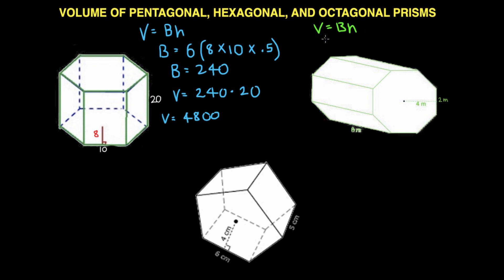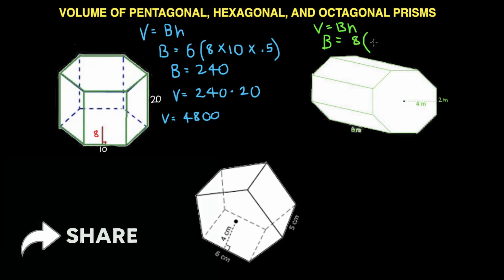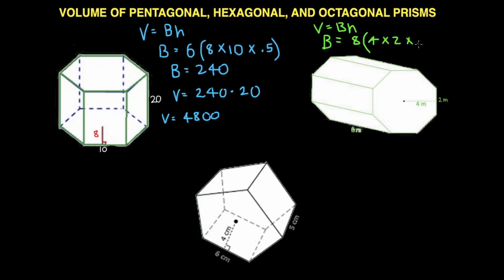Big B is going to be 8 distributed to 4, which is the apothem, times 2, times 0.5. We solve for this and we get 8 times 0.5 which is 4. 4 times 8 is 32. So big B is 32, and now we multiply it by the height.